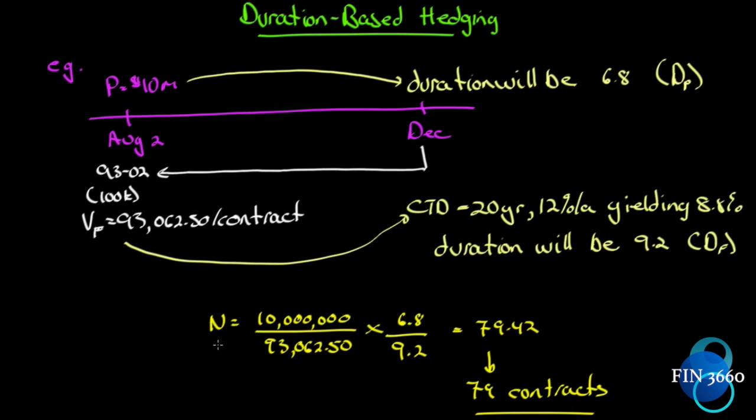The optimal hedge ratio that we need in this respect is 10 million, which is our portfolio, divided by 93,062.50, which is the value of each futures contract. Now you'll recall from chapter 3, this was the optimal hedge ratio, right? If we had a thousand barrels of oil or 10,000 barrels of oil to hedge and each contract was for a thousand, we just did the division.